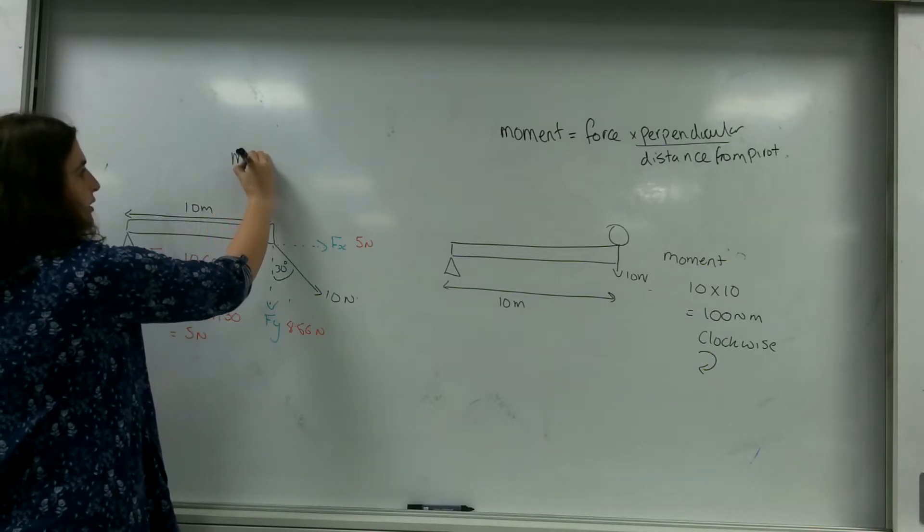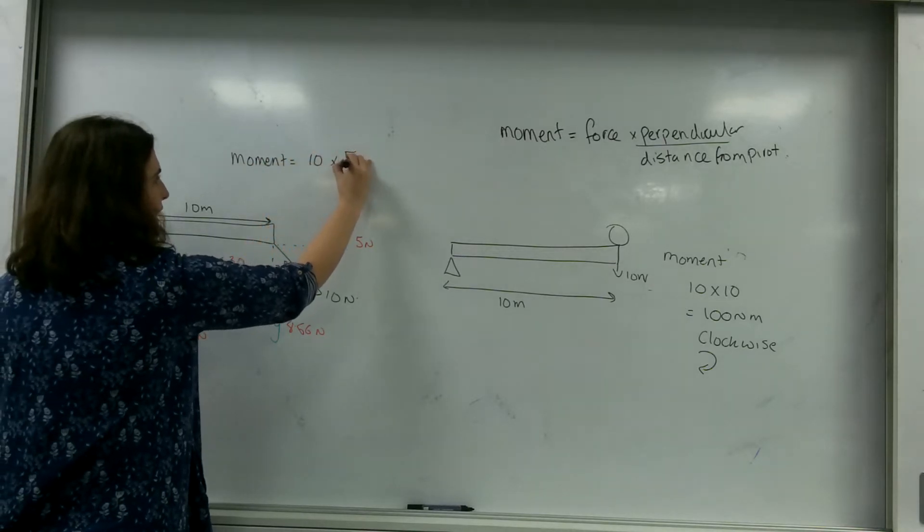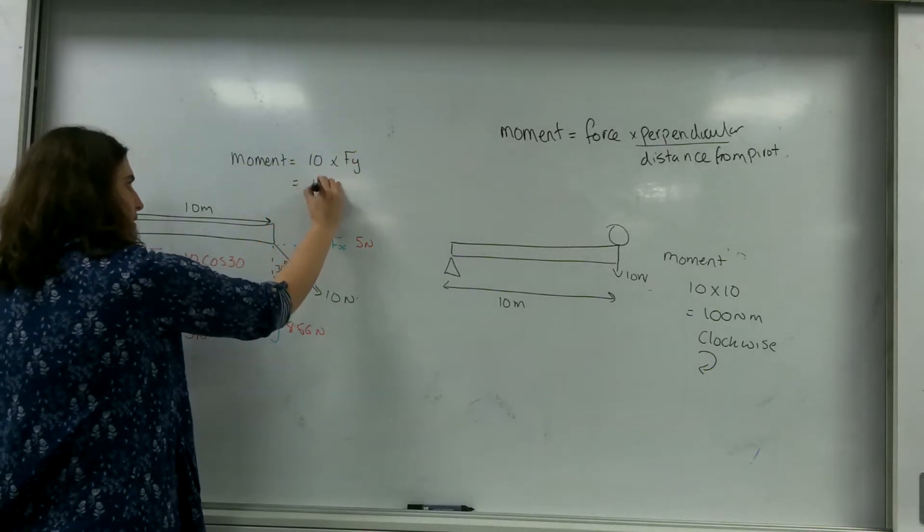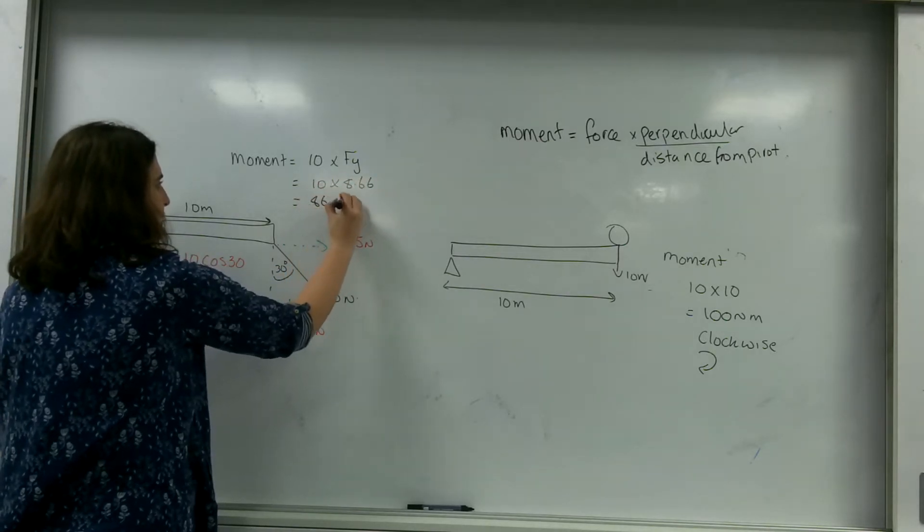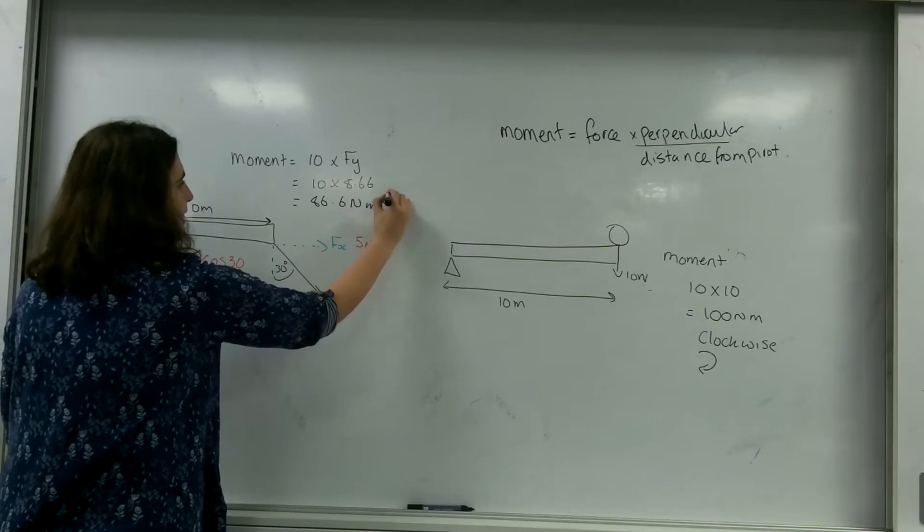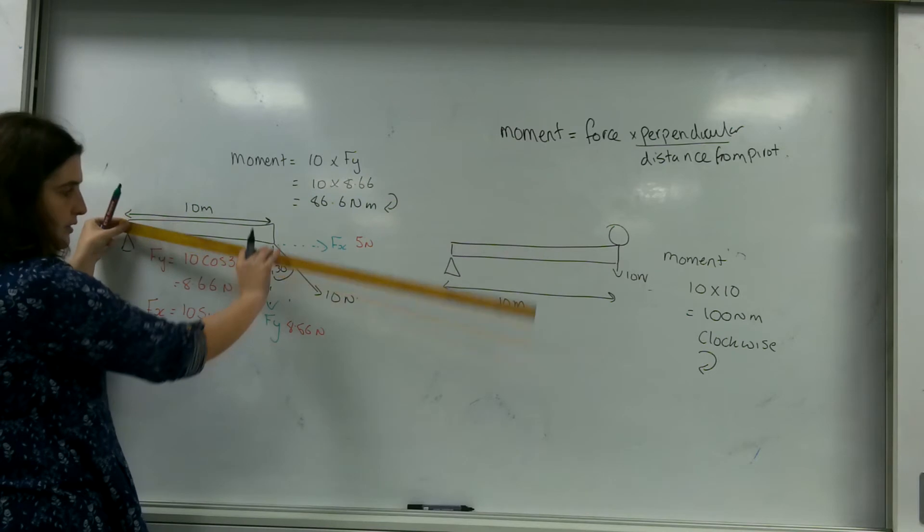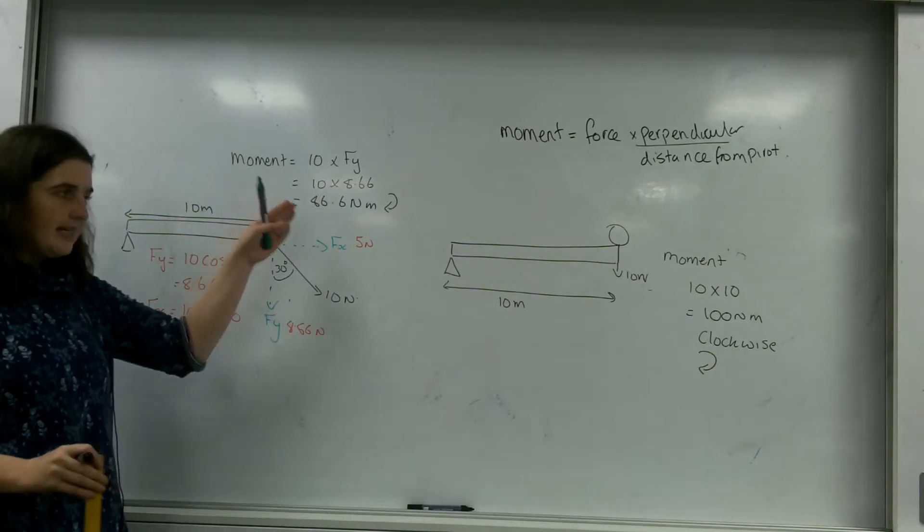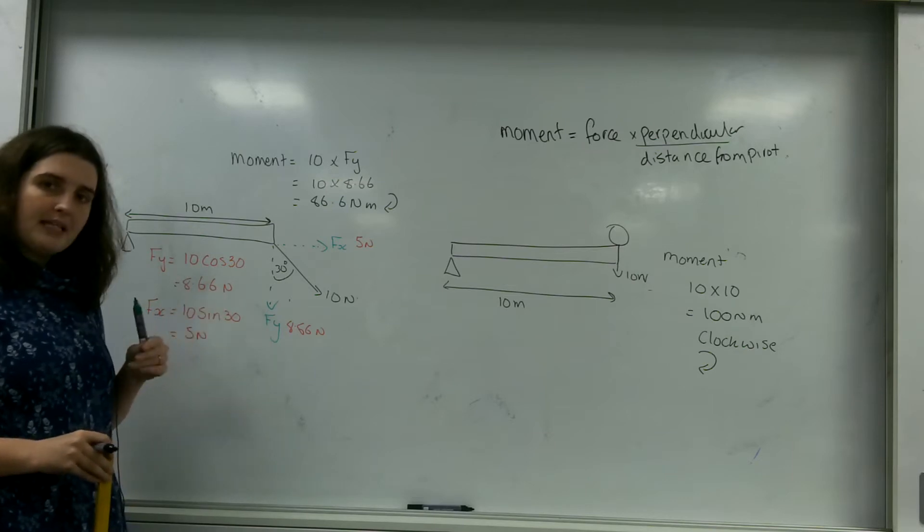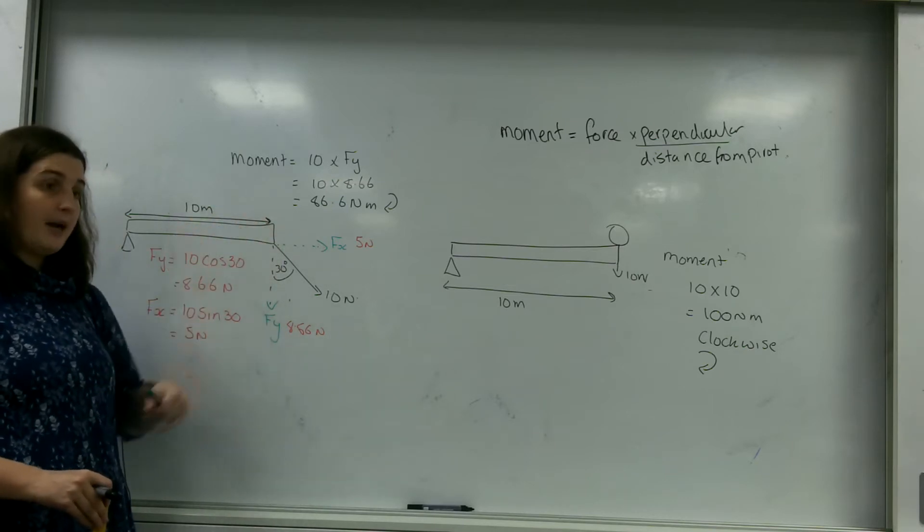So my moment is 10 times by f_y, so that's 10 times 8.66, which is 86.6 newton metres. And again, that is clockwise, as you can see, my force is going to be pulling me this way. And as you can see, this is slightly less, but that kind of makes sense, because only a little bit of that is actually acting to help spin it.